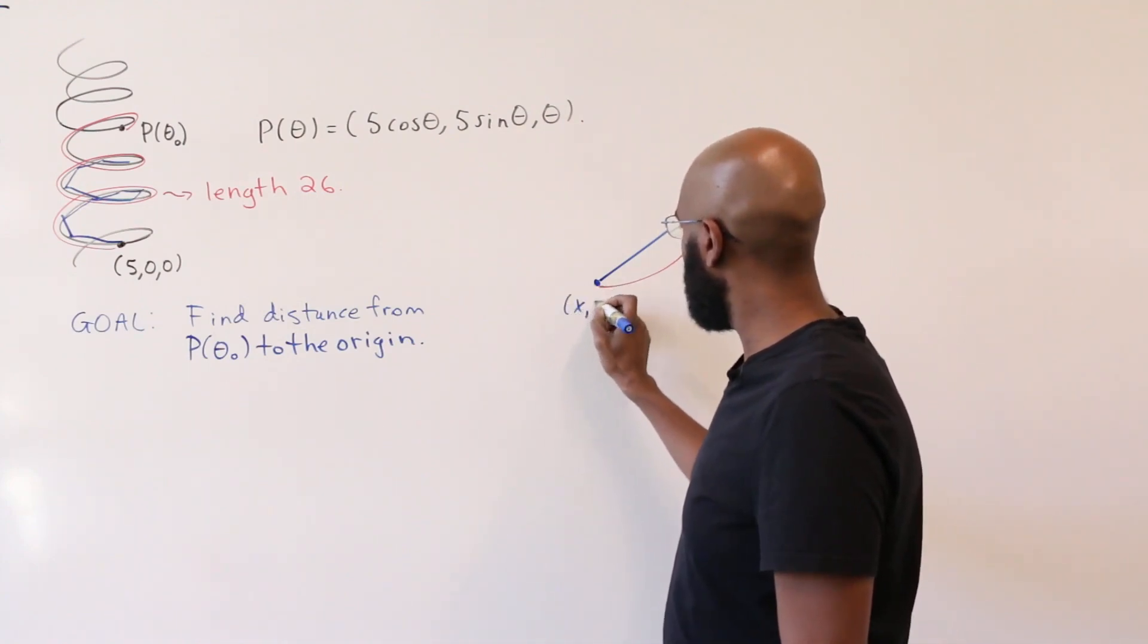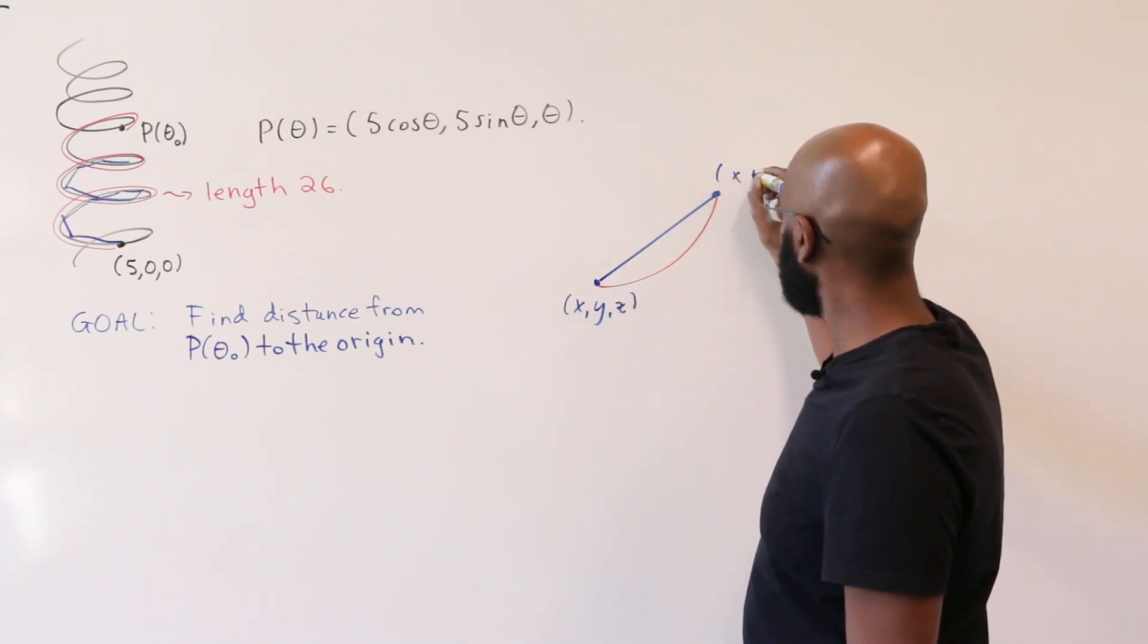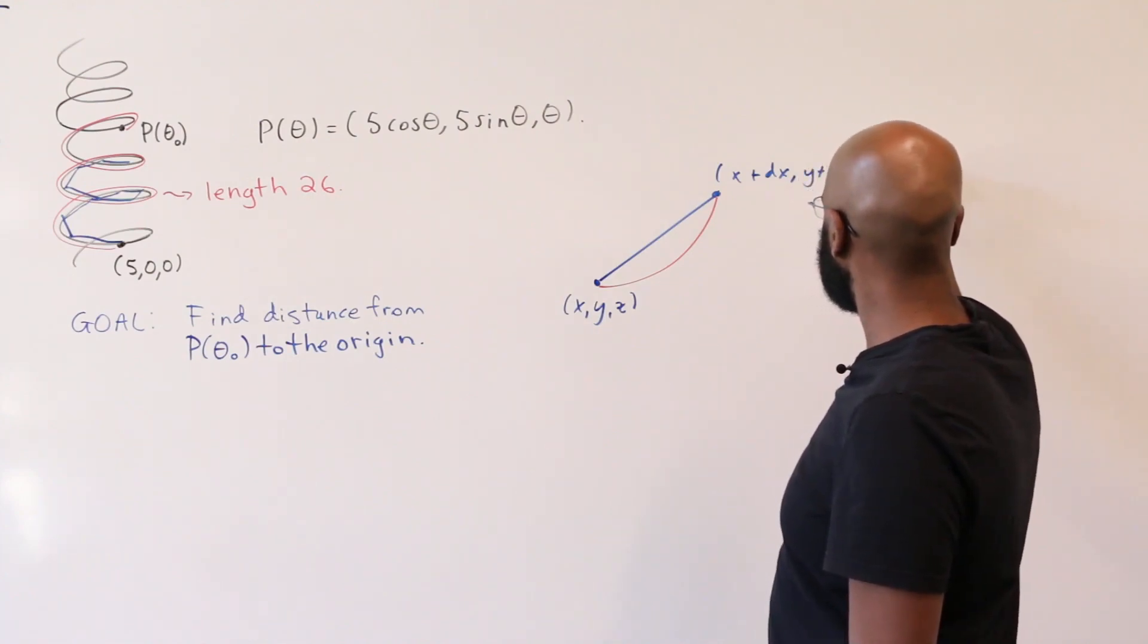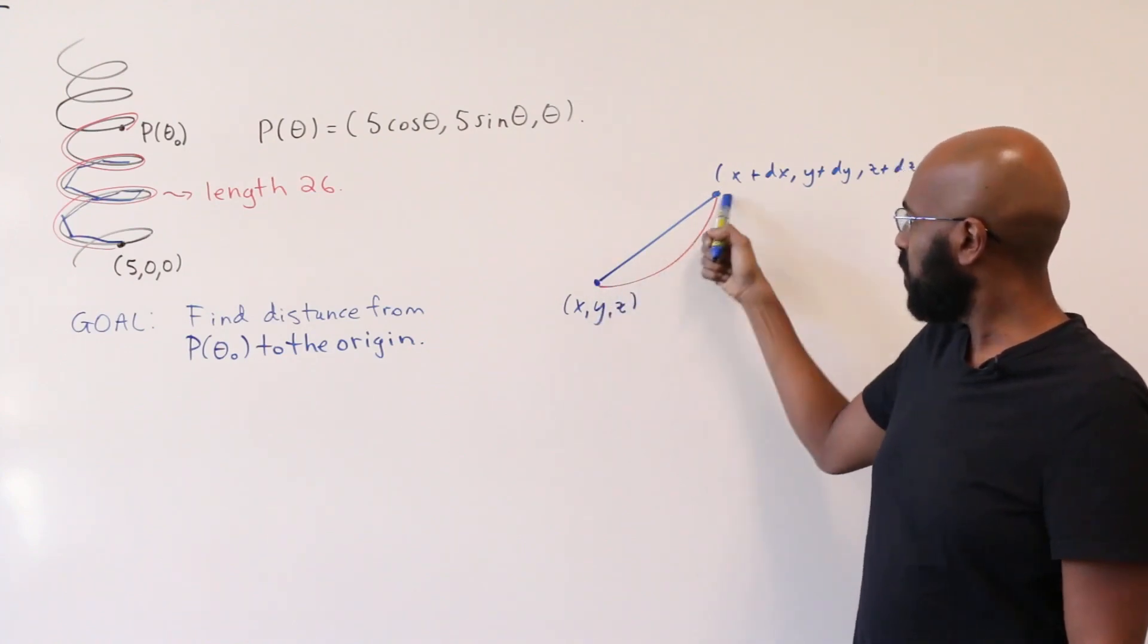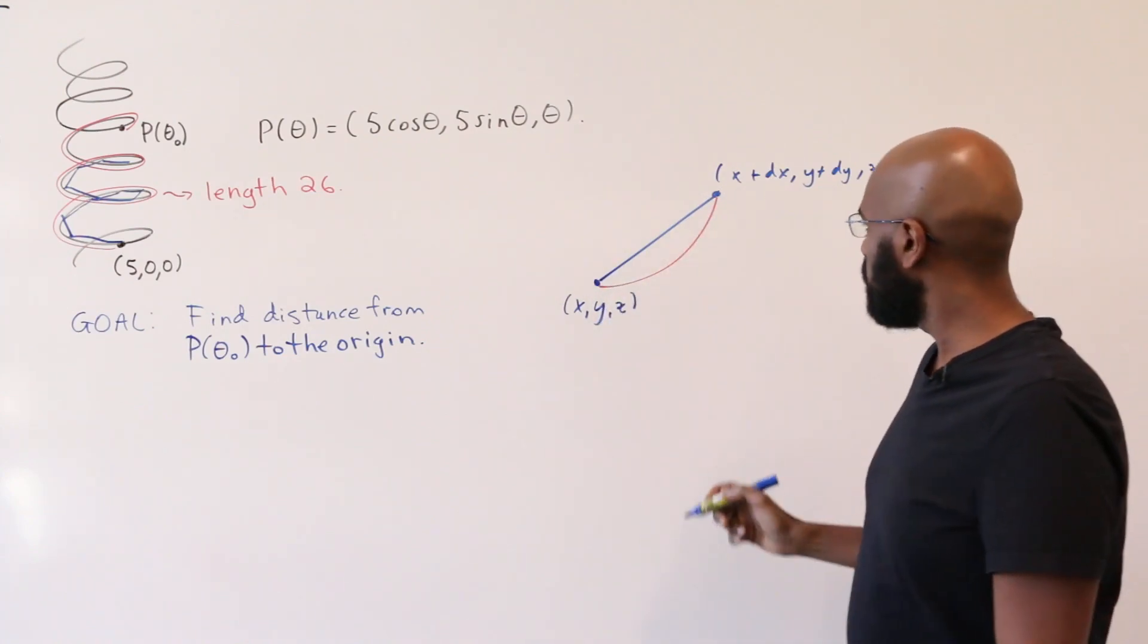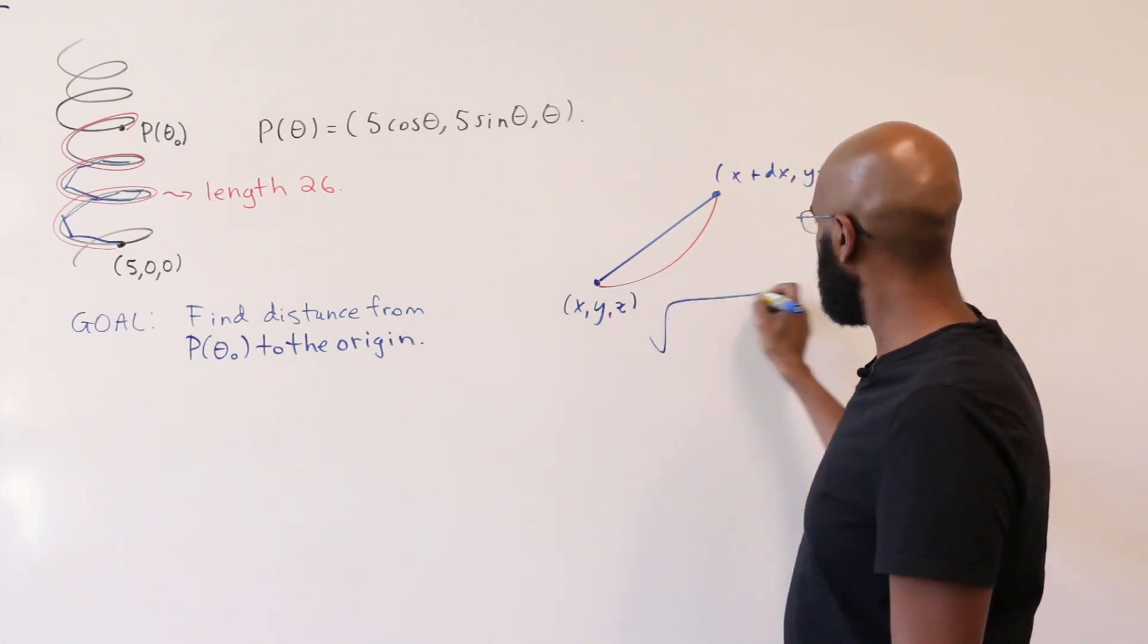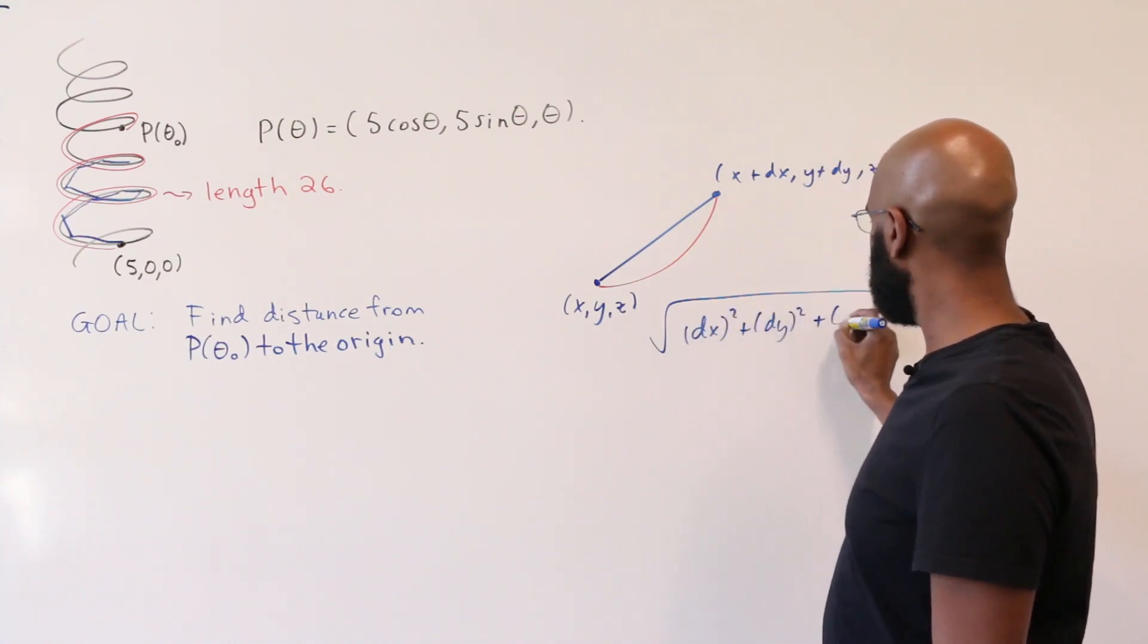So here we have some generic point (x,y,z), and then here we have (x plus a little bit, that's what dx stands for, y plus a little bit which is dy, and z plus a little bit which is dz). So the distance from this point to this point, which is like this line segment, is the square root of dx squared plus dy squared plus dz squared.